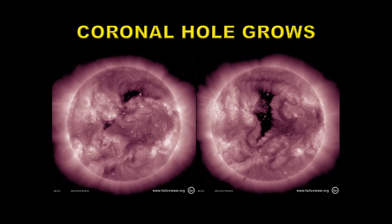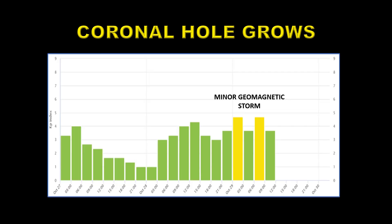We had a very strong coronal hole come across the sun towards the end of the month, so I looked back to the previous rotation at the same time and you can see how much that coronal hole has grown. The second appearance of the coronal hole produced a short geomagnetic storm — not a very strong one, only a G1 level storm — but it's still having an effect on the Earth. It'll be interesting to see what it will be like when it comes back next month.